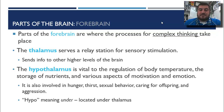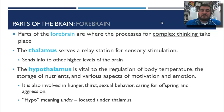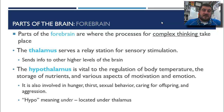The hypothalamus — 'hypo' means under — is a very small structure located under the thalamus, but it's very important. It regulates body temperature and the storage of nutrients. It's involved in motivation, emotion, hunger, thirst, sexual behavior, caring for offspring, and aggression. So it's a very primitive part of the brain, but critical in some of our most basic functions.